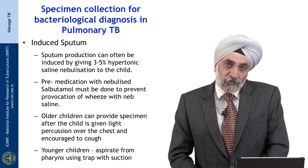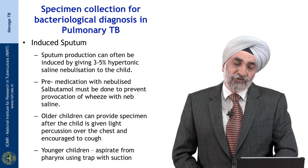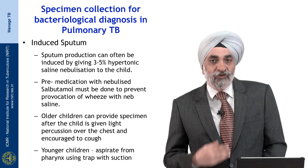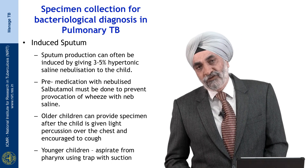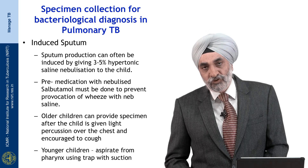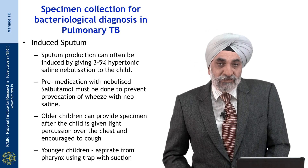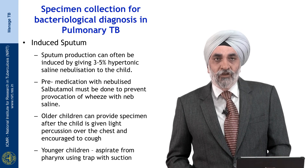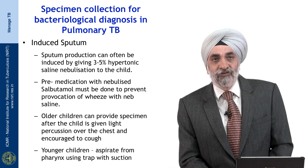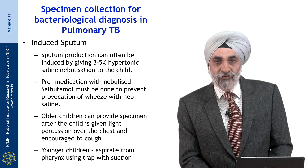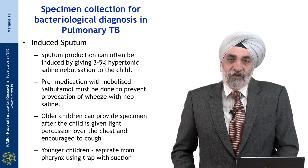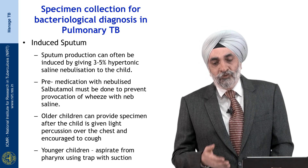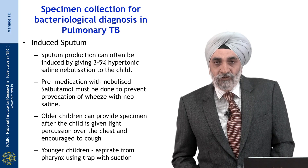Induced sputum is an alternative method of collecting specimen. Sputum production can often be induced by nebulizing 3 to 5 percent hypertonic saline, after which the child expectorates. Since hypertonic saline can sometimes cause bronchospasm, it is important to pre-medicate with nebulized salbutamol first, followed by 3 to 5 percent hypertonic saline. An older child, after sputum induction and light chest percussion, may be able to expectorate and provide the specimen.